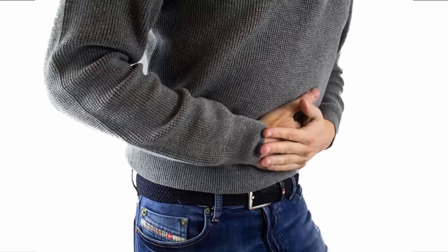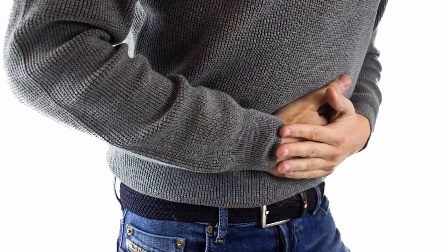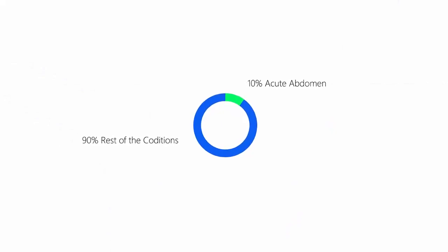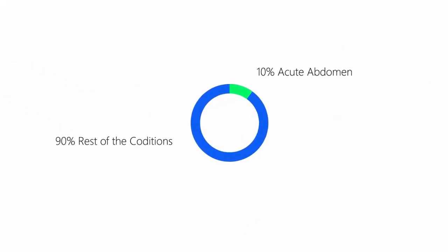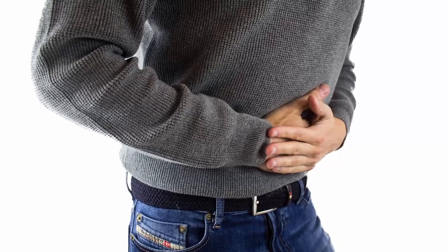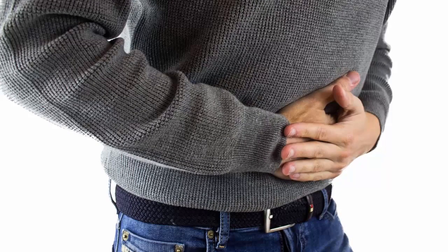Acute abdomen refers to a sudden, severe abdominal pain which can be caused by a number of conditions. It is one of the common conditions seen in emergency departments, accounting for roughly 7–10% of emergency visits. Some patients may point to a specific area of pain in the abdomen, while others have a generalized abdominal pain.